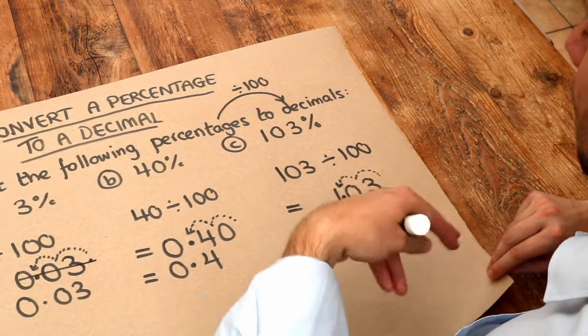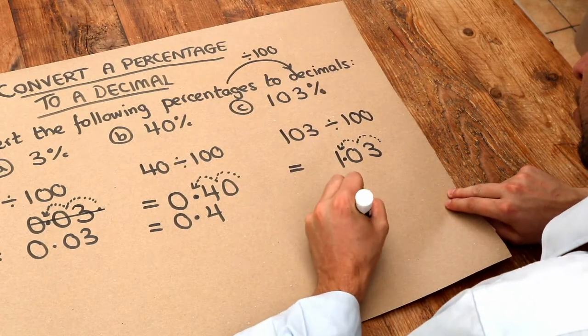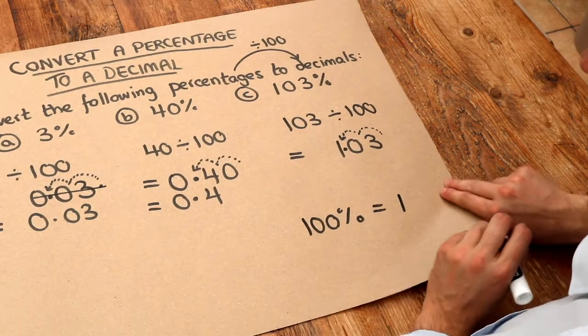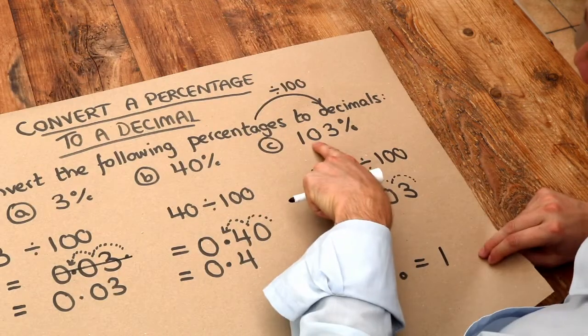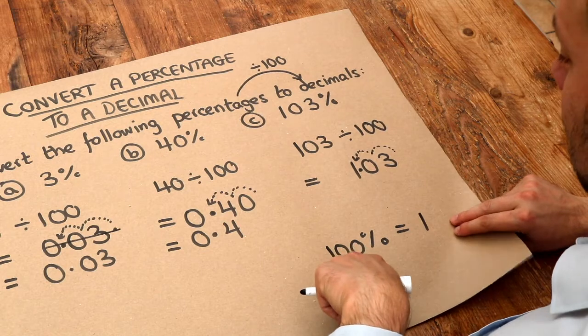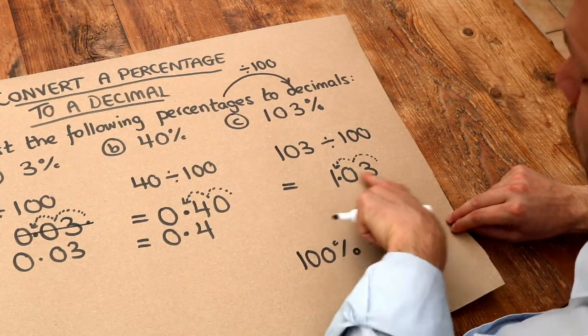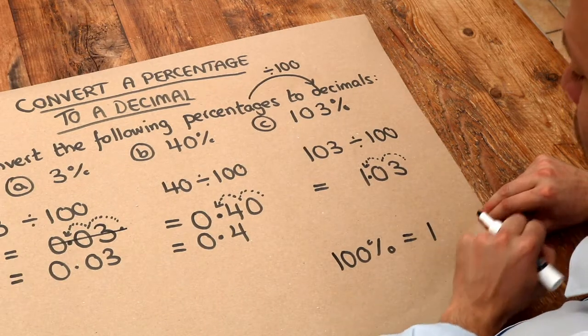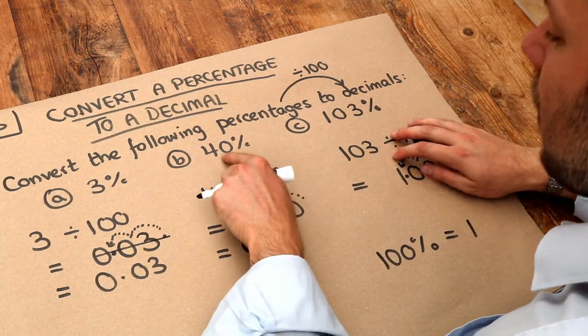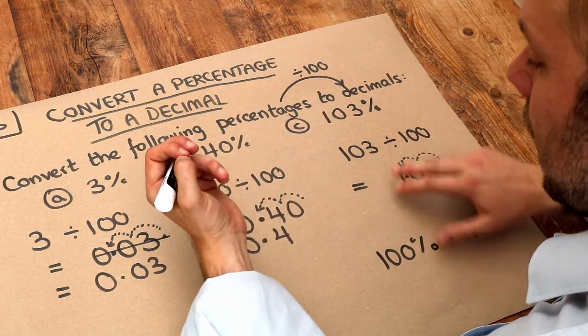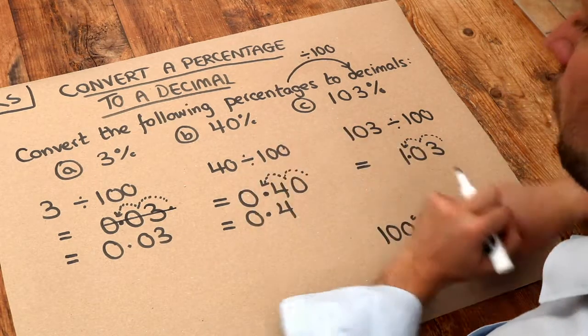And you should have a sense that this feels right. Because 100% is equal to a whole. And that means that if we have something just more than 100%, so 103% is just more than 100%, then as a decimal we should have something that's just a bit more than one. And indeed 1.03 is just a bit more than one, so it kind of feels right. Just like 40% here for example - that's sort of roughly half of something. And 0.4 is roughly a half, so it feels just about right.